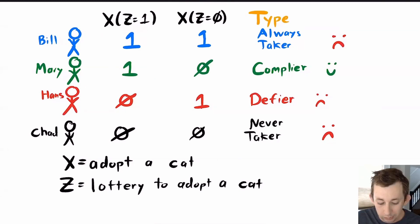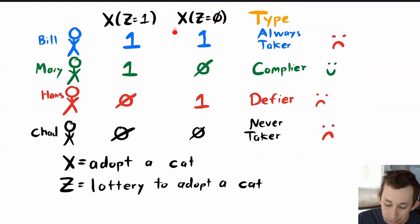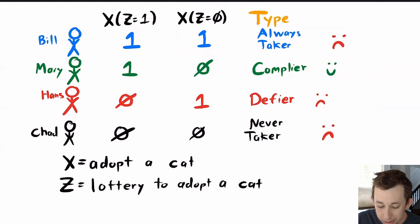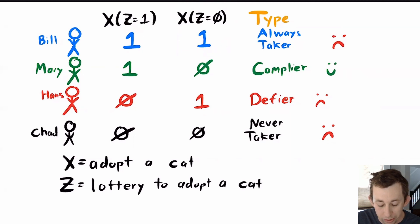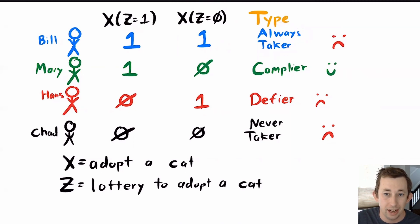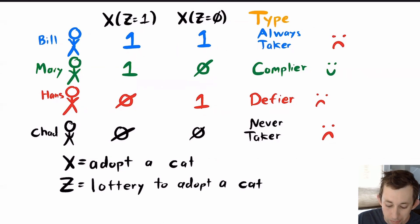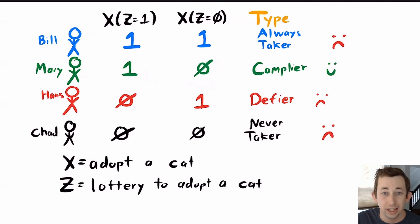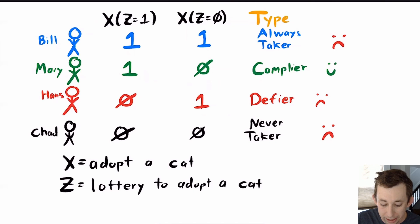Bill is an always taker. Even though Bill did not win the lottery — his name was not picked — he chose to adopt a cat anyway. Since he adopted a cat even when Z said he wasn't eligible, he's an always taker; he'll take the treatment regardless. Mary is a complier: she adopts a cat (X=1) when Z=1, and does not adopt (X=0) when Z=0. She does exactly what she's told.